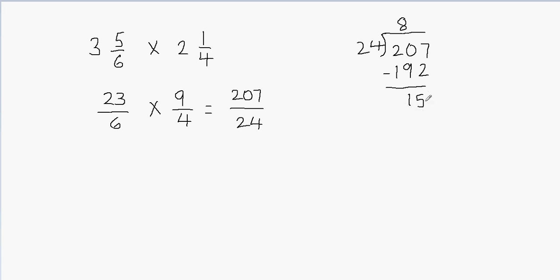Now we're going to write the answer in the form of a mixed fraction. We're going to write 8 first because that's the quotient — that's my whole part. And then I'm going to use my remainder and the divisor to form the fractional part. My remainder becomes the fraction's numerator, and the divisor becomes the fraction's denominator.